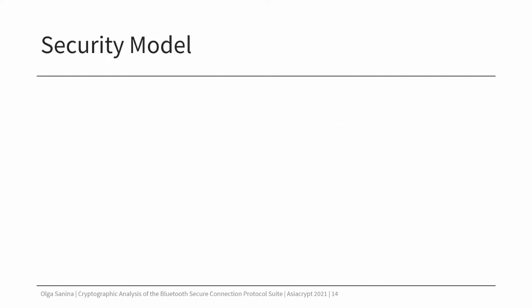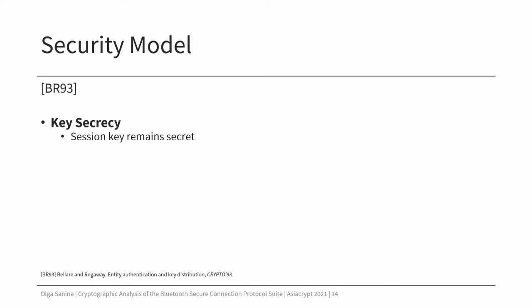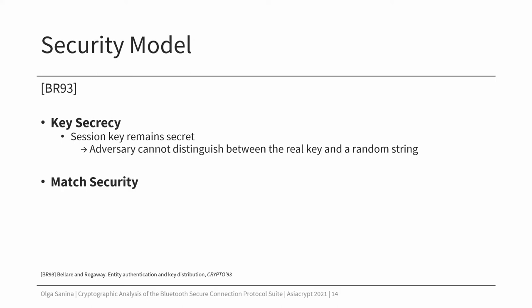Now I will show you the model that we used to analyze the key exchange in Bluetooth. We used a game-based security model in the Bellare-Rogaway style. We aimed for two security properties. The first property is key secrecy, which intuitively means that the encryption key remains secret. So when we give the adversary the real key and some random string, the adversary cannot efficiently distinguish between them.